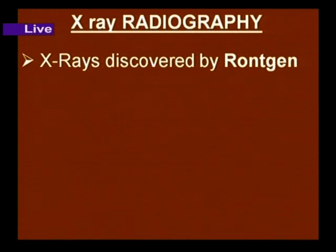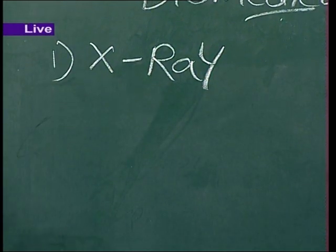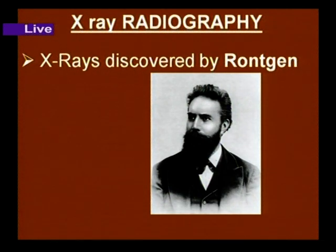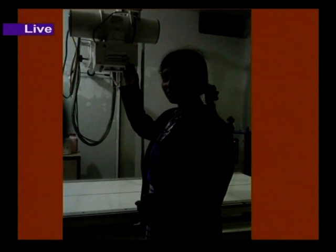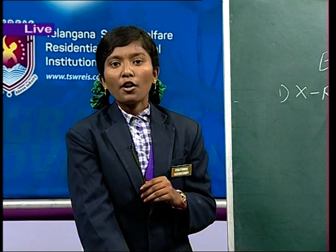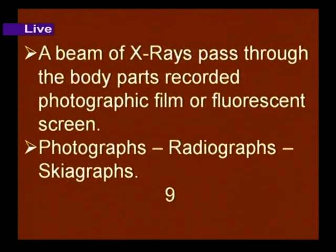Now we will discuss about all these sections very briefly. First, we will discuss about X-ray radiography. X-ray was discovered by Röntgen. Let us have a glance at the photograph of scientist Röntgen. Here you can see the X-ray machine and a bed, and below the bed you can see the photographic film or fluorescent screen. Here you can observe the X-ray machine, with a girl showing the X-ray machine. A beam of X-rays passes through the body parts and these X-rays are recorded in the photographic film or fluorescent screen.